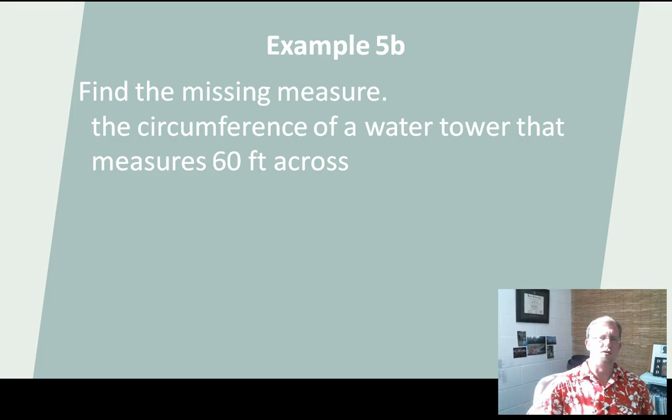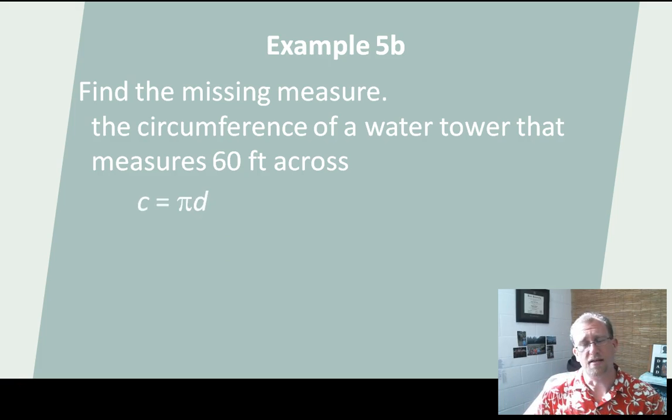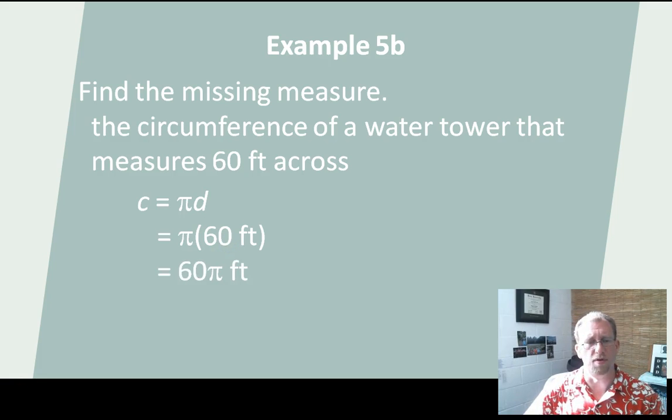Let's do this again. The circumference of a water tower that measures 60 feet across is what we'd like. So 60 feet is the diameter. 60 times pi will give me the circumference. And so that would be about 188.50 feet. That's a monstrously large water tower.